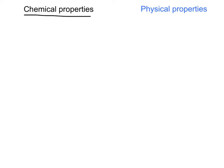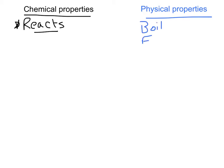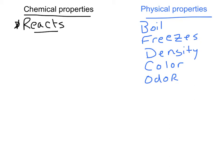Remember the difference between chemical and physical properties. Chemical properties are basically how something reacts with something else — how it is involved in chemical reactions. Physical properties are where it boils, where it freezes, what its density is, color, and odor, as long as the odor doesn't change. You could also say: is it malleable — can I mold it? Is it ductile — can I pull it apart? Chemical properties include how it reacts with air or water, whether it corrodes, whether it rusts.